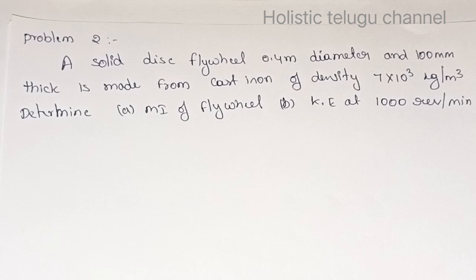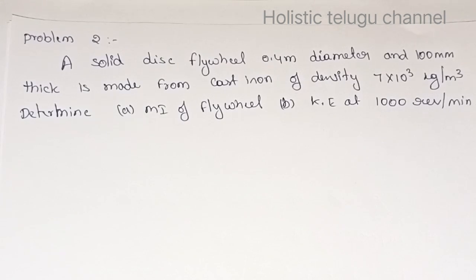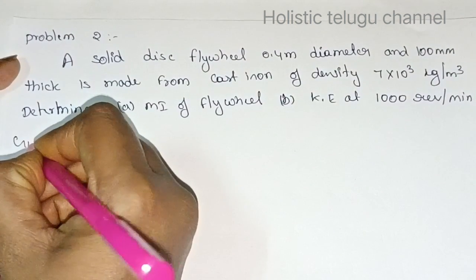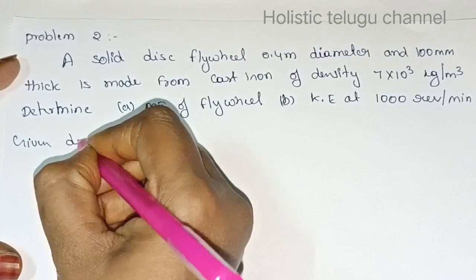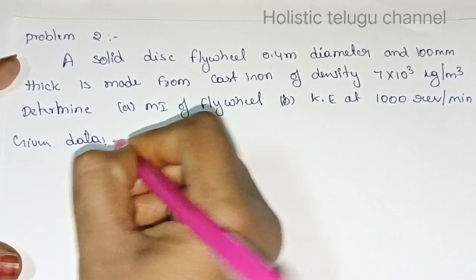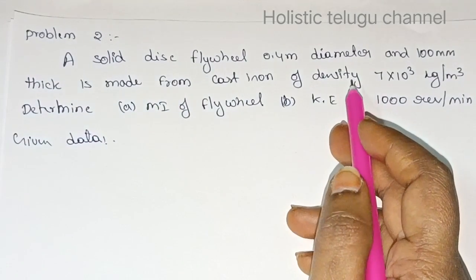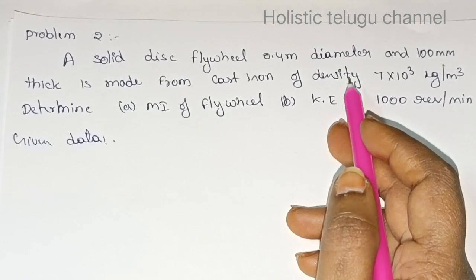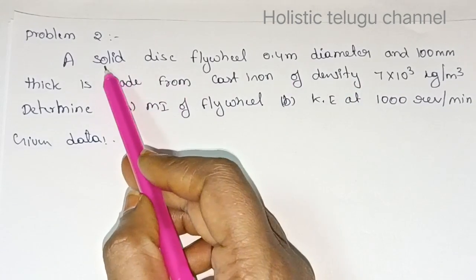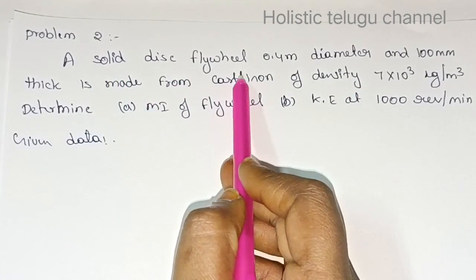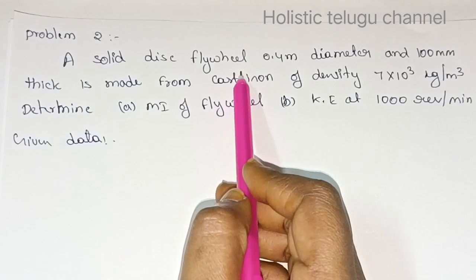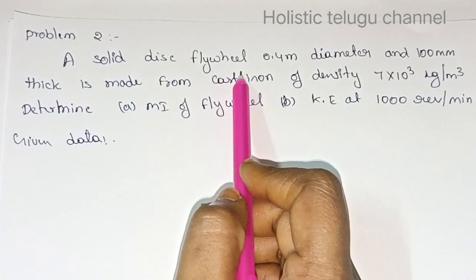Let's start. I will write the given data — compulsory given data. The diameter of the flywheel: for this solid disk flywheel I will choose the formulas. I will change to the radius of gyration.